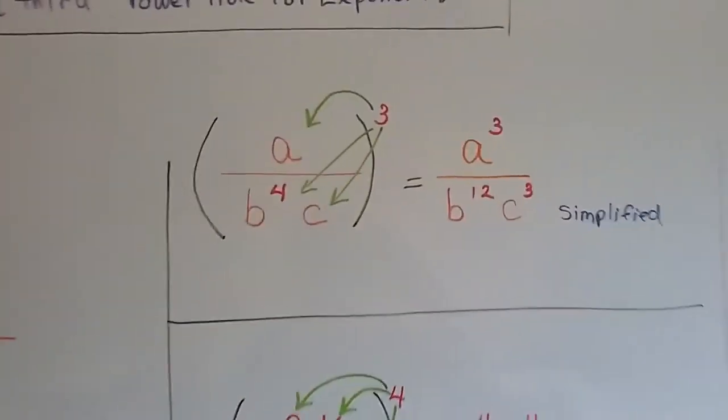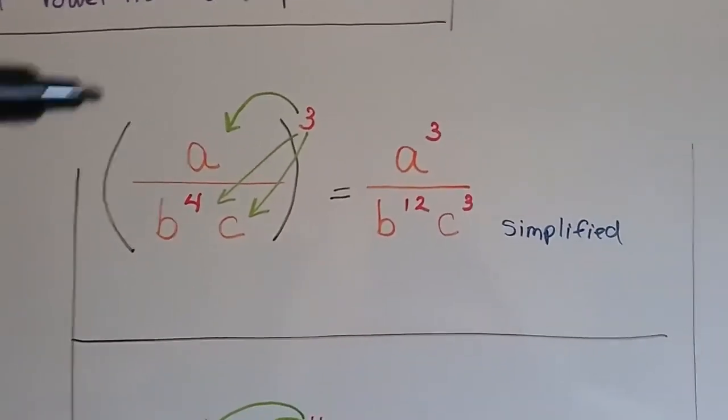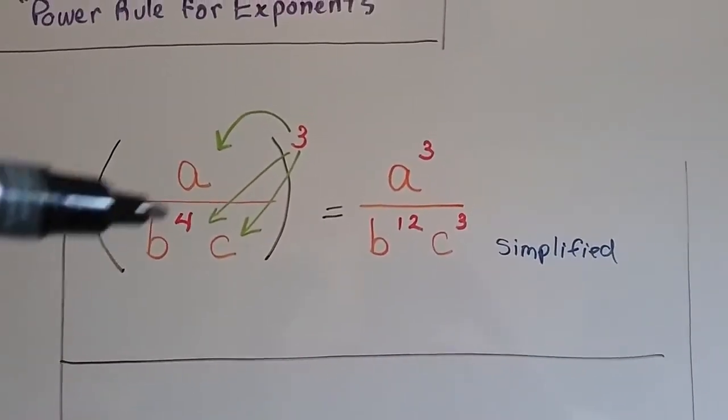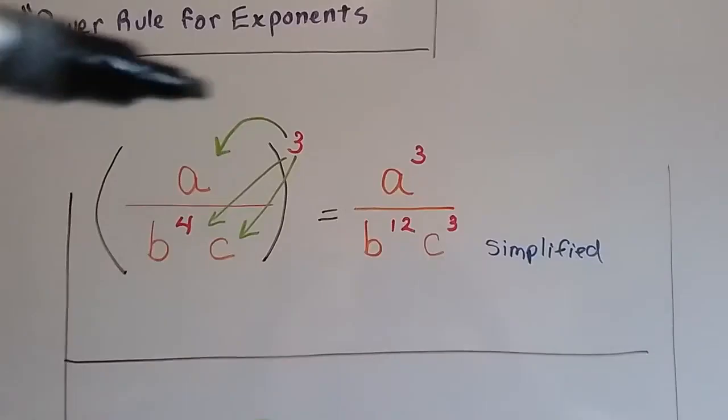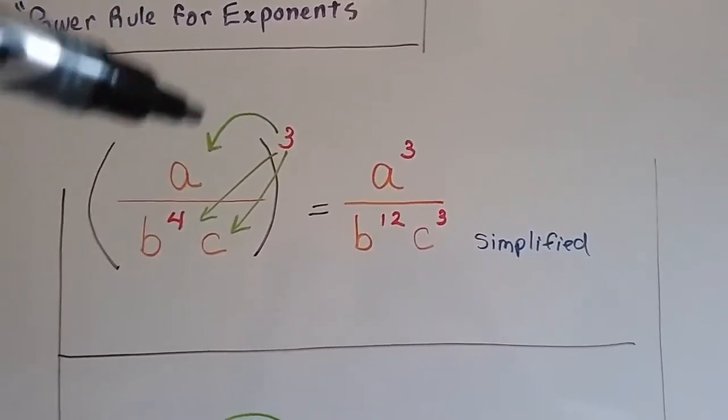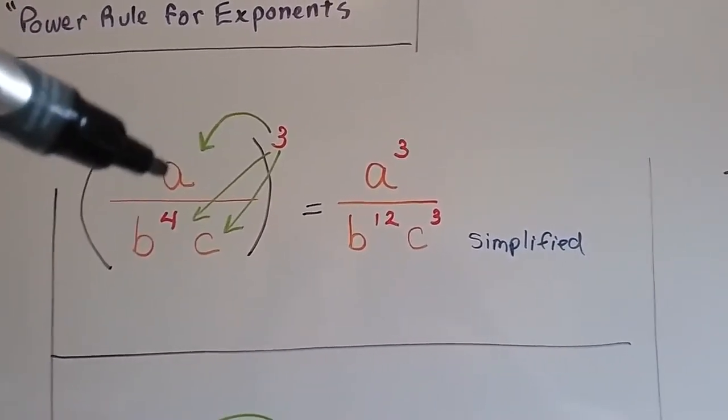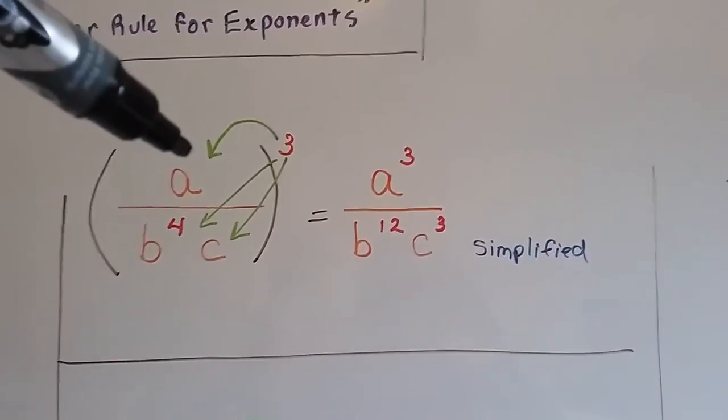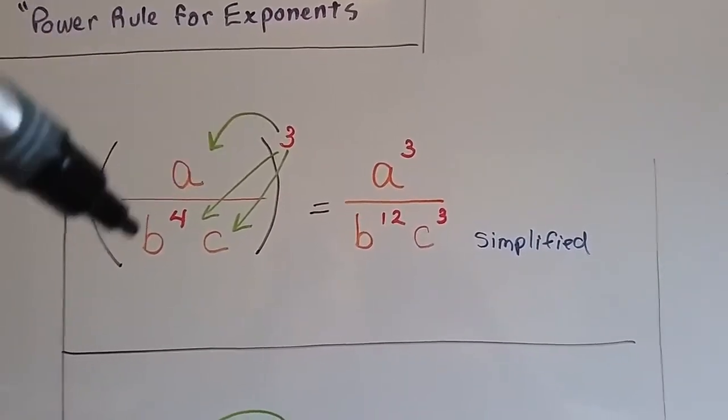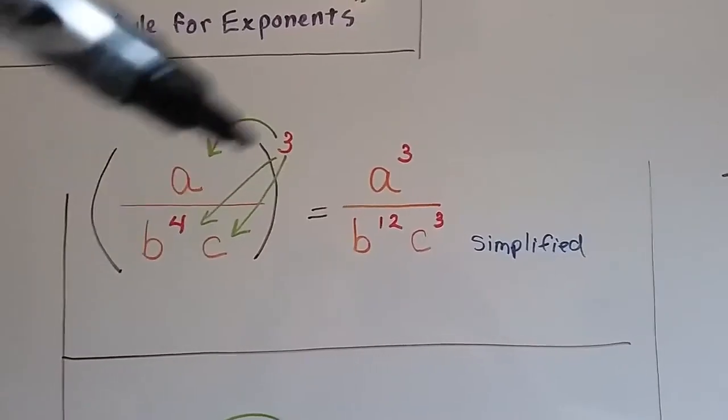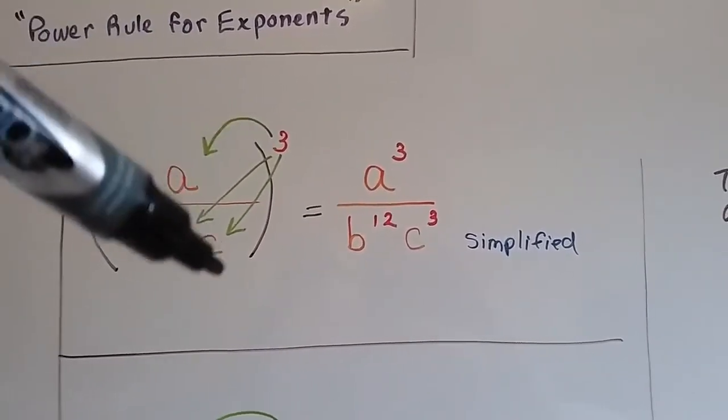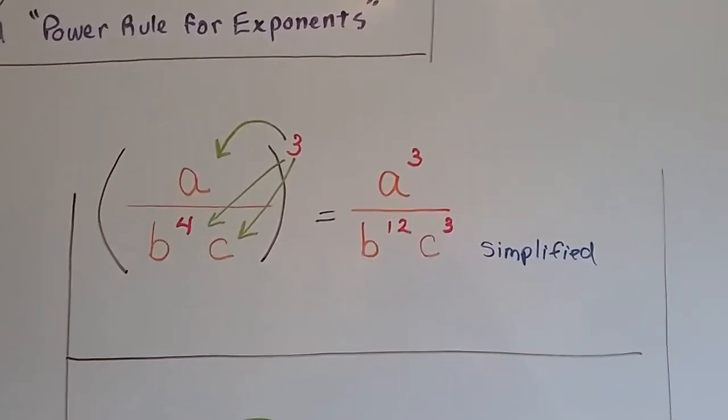Let's take a look at this one with more variables in it. We have a divided by b to the fourth power, c. This three exponent is going to get distributed to each one of these. So we're going to end up with a to the third power, because there's like a little invisible one there. And b to the twelfth, because 3 times 4 is 12. And then c to the third, and that's simplified.